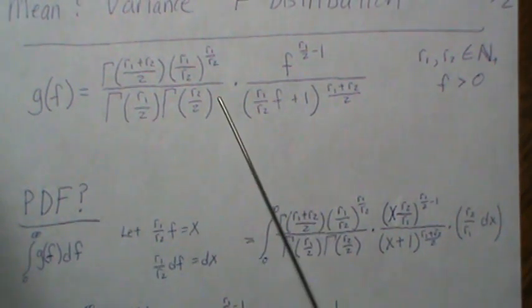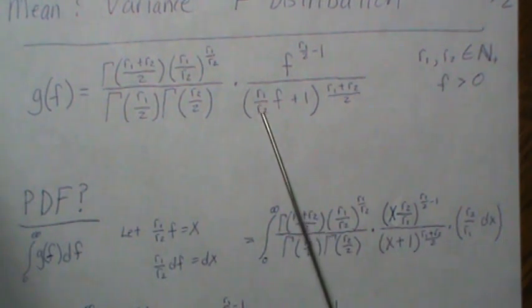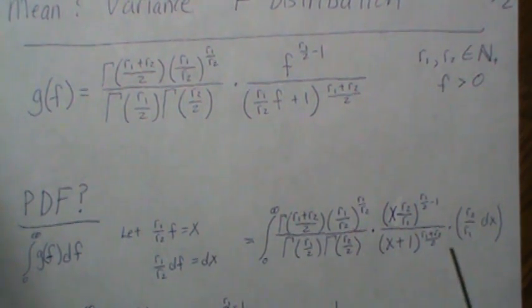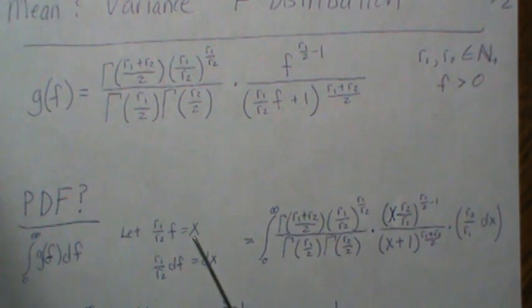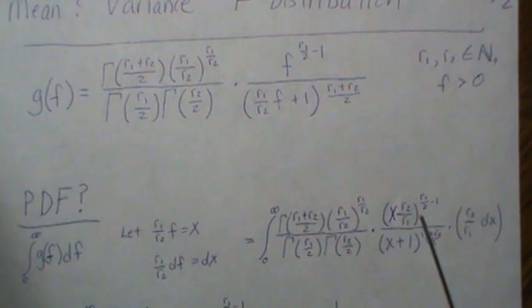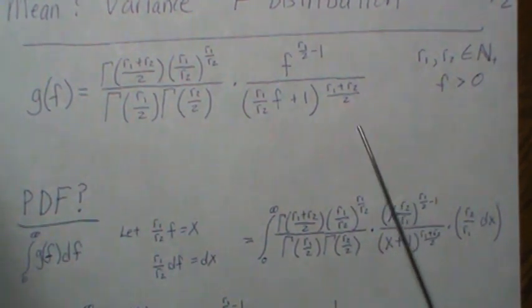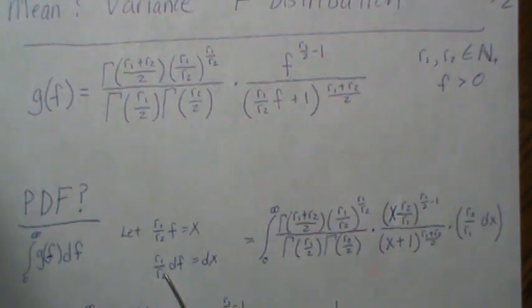So we take this density and make a variable change, let x equal, it's actually this piece right here, and then we take the derivatives of both sides, and then when we plug in our information, f is x times r2 divided by r1 raised to that power. The denominator is this and the df that would be here is r2 over r1 dx.